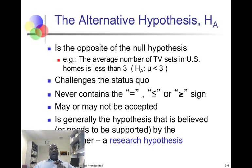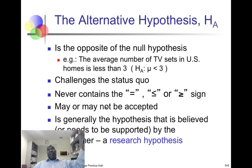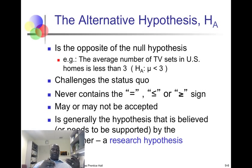We frame two hypotheses: the null, which is what we assume is true — our default position — and the alternate, which is directly opposite to that. If we're assuming households have at least three television sets, the alternate is they have less than three. The alternate hypothesis is denoted HA, and it never contains an equal sign. We support the alternate hypothesis by rejecting the null. If we don't reject the null hypothesis, we cannot support the alternate. If our evidence allows us to reject the null, then we have supported the alternate — also called the research hypothesis.